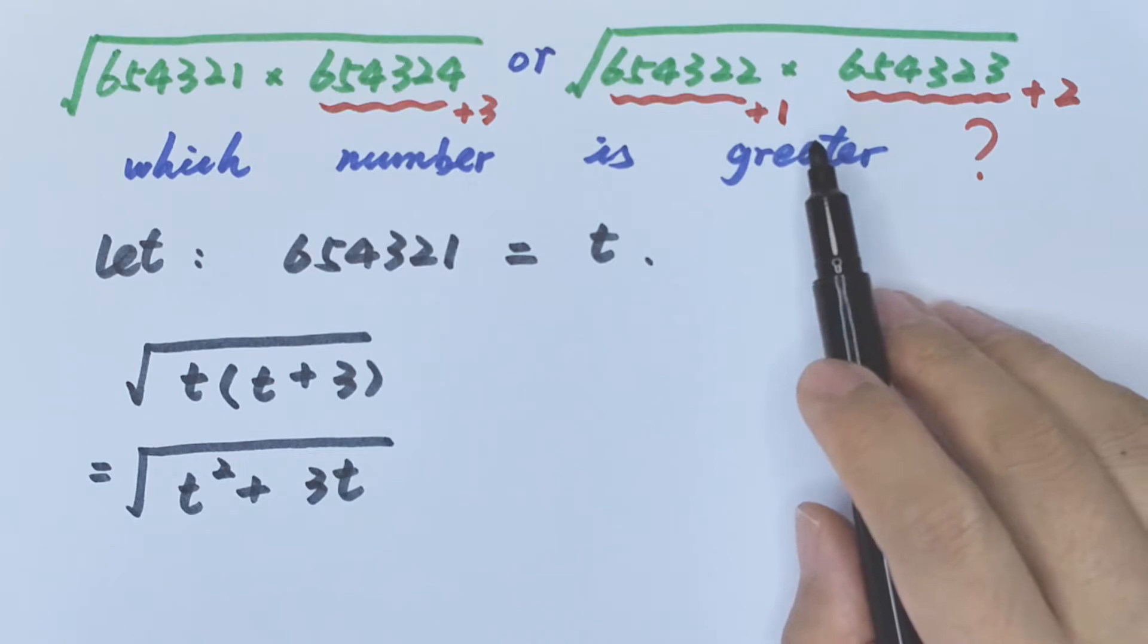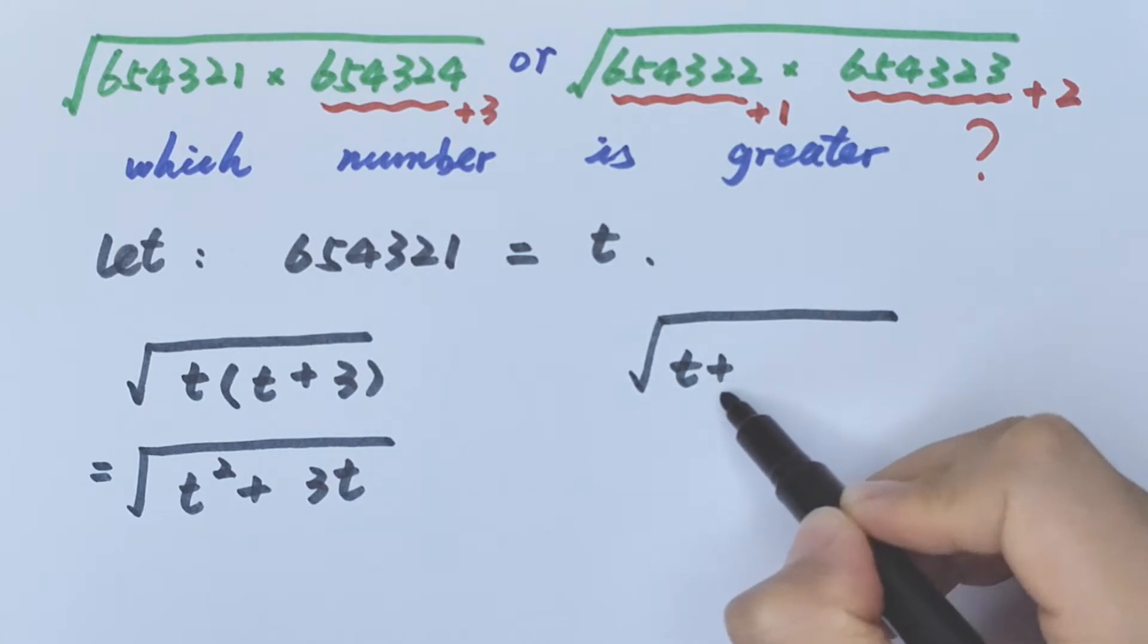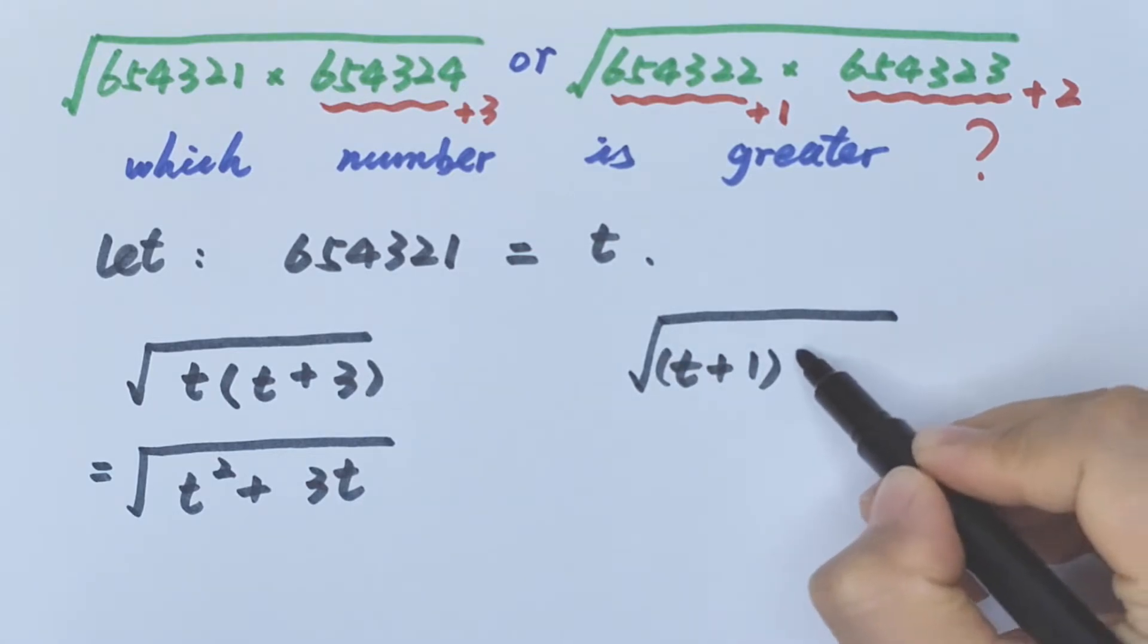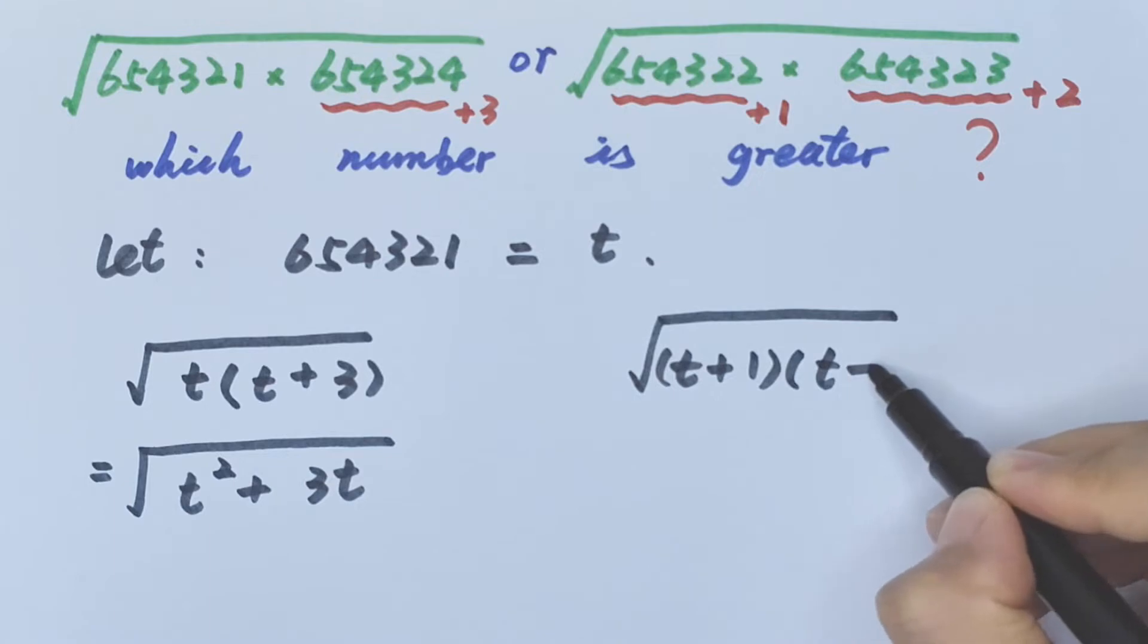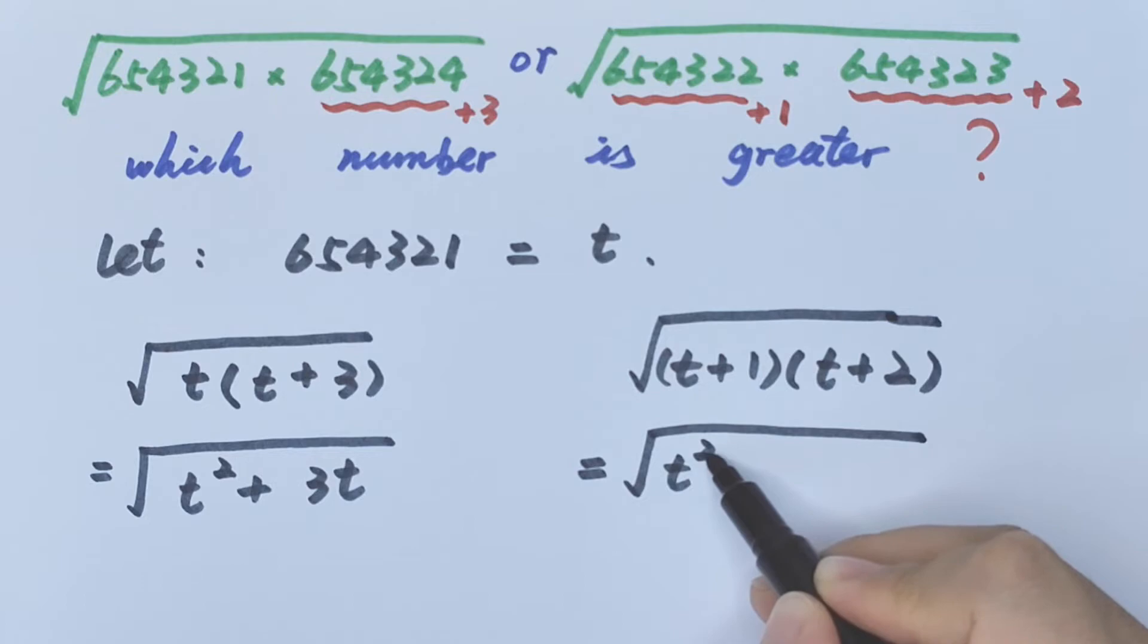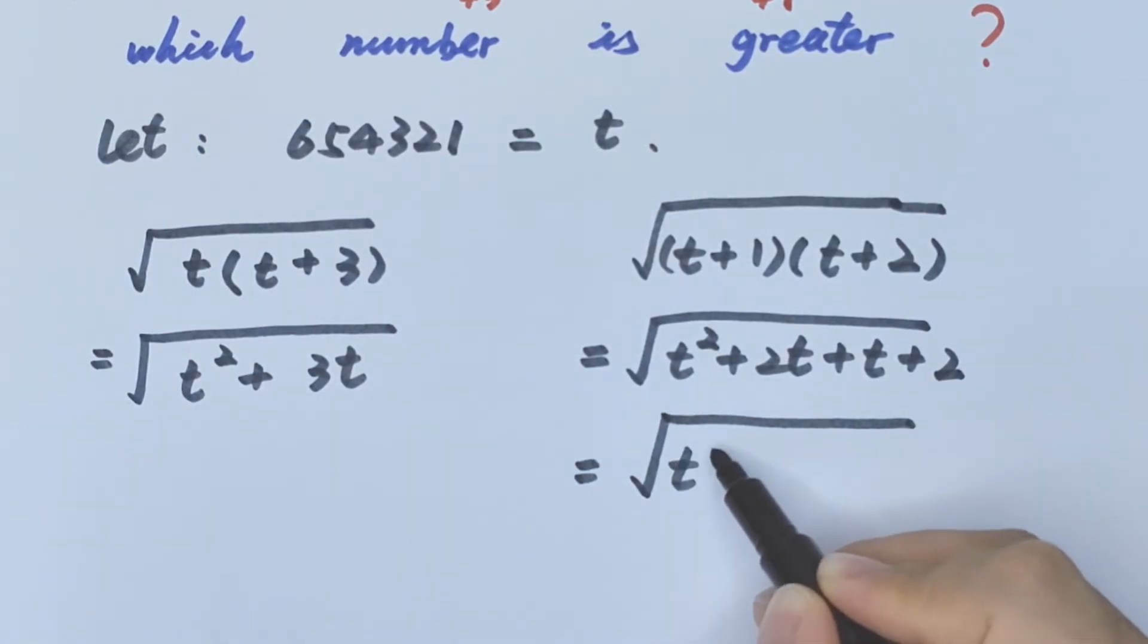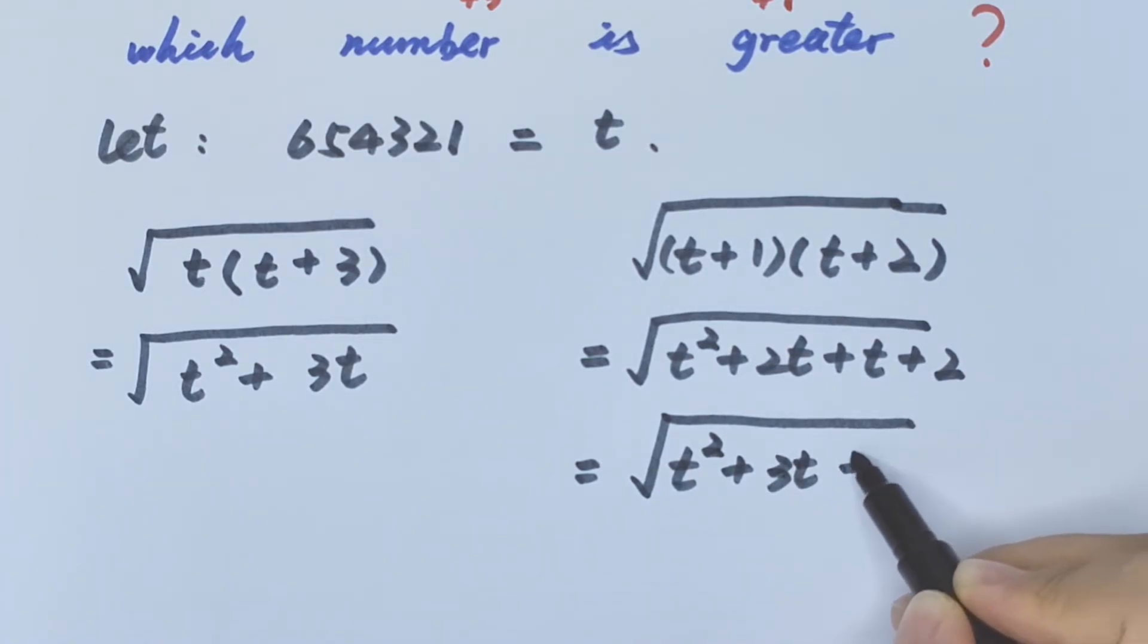And the right side is square root of t plus 1 bracket times t plus 2 equals square root of t times t is t squared plus 2t plus t plus 2 equals square root of t squared plus 3t, then plus 2.